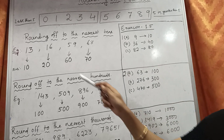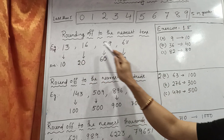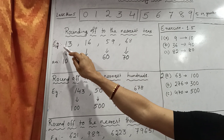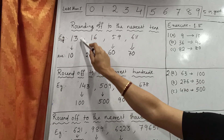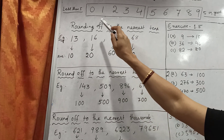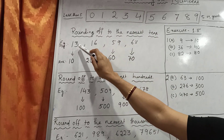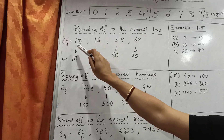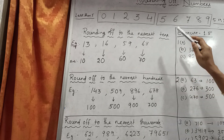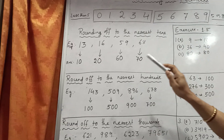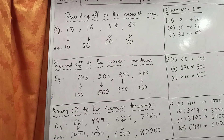So when we round off to the nearest 10, how do we do it? I have given 4 examples. The first example is 13. The first rule is you have to look at the units digit. If the units digit is from 0 to 4, then the units digit becomes 0 and the tens digit remains the same. If the units digit is 5 or more, the tens digit is increased by 1.